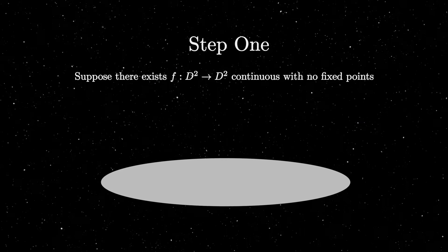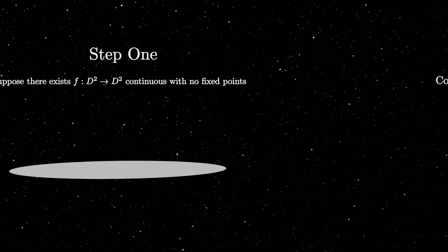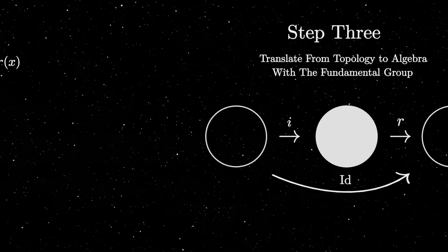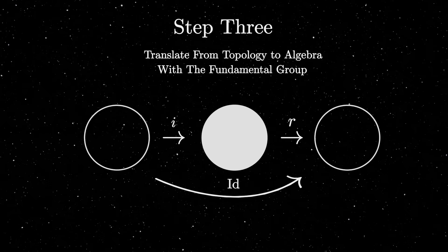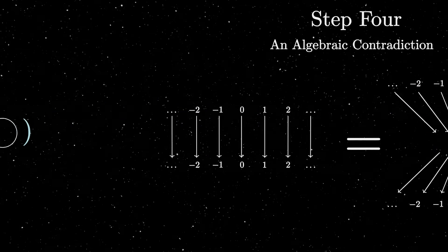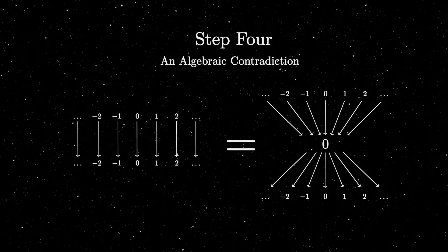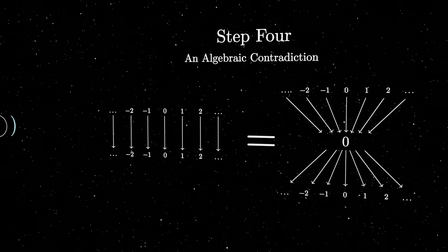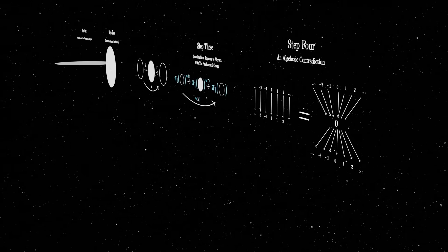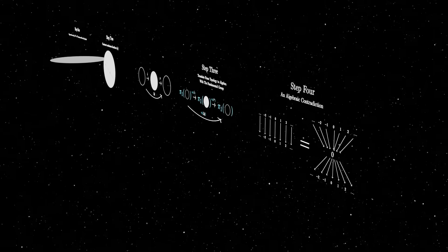Let's recap what we just did. We started by assuming that there was a function F from the field circle to the field circle which had no fixed points. This function F then allowed us to create a new function R, which gave us this diagram. When we translated this diagram into algebraic terms using the fundamental group, we saw that something was very obviously wrong. There could not be a function from the integers to zero back to the integers, which was equal to the identity on the integers. In other words, we reached a contradiction on our original assumption of the function F having no fixed points. This means that every continuous function between the field circle and itself must have at least one fixed point.